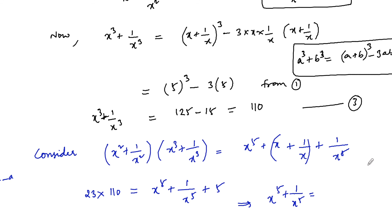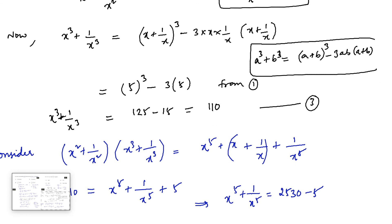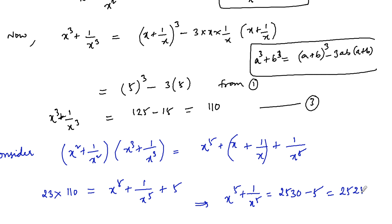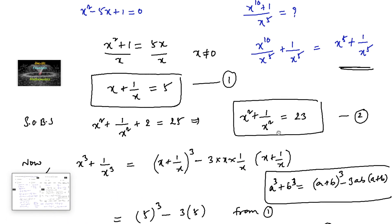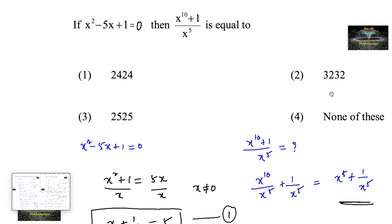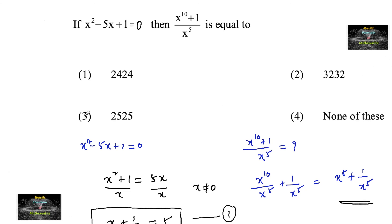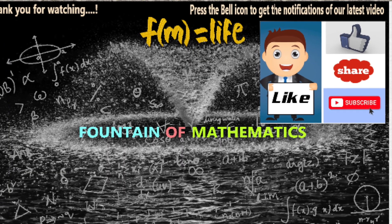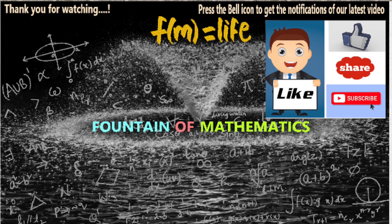23 times 110 equals 2530, minus 5 gives 2525. So the answer for x power 10 plus 1 upon x power 5 is 2525.